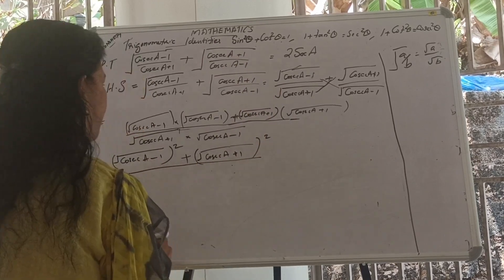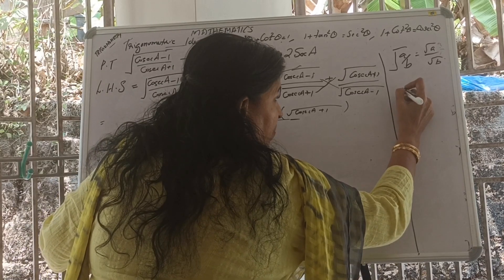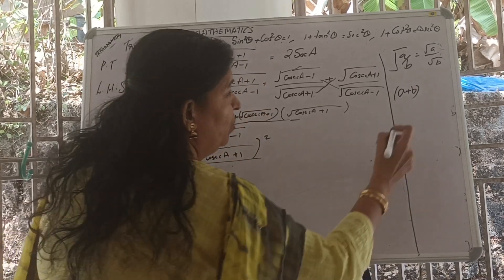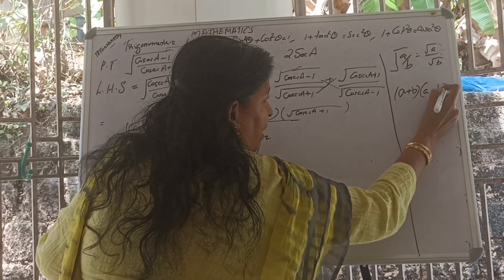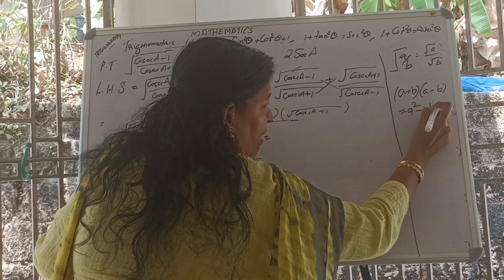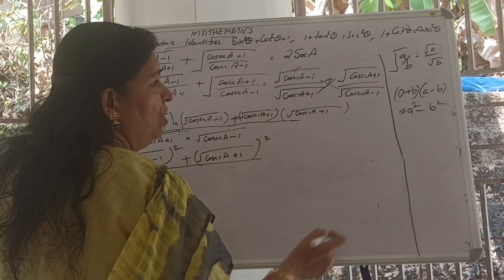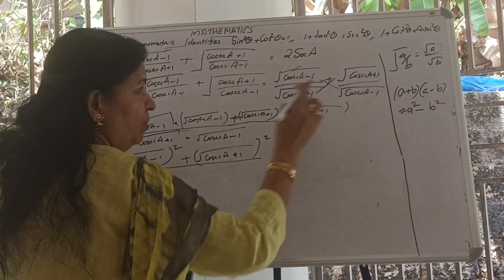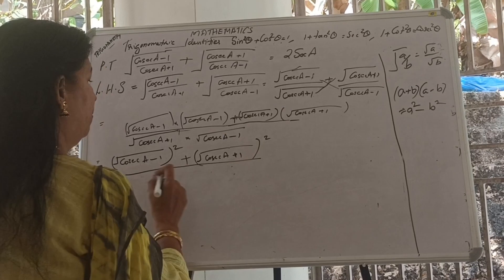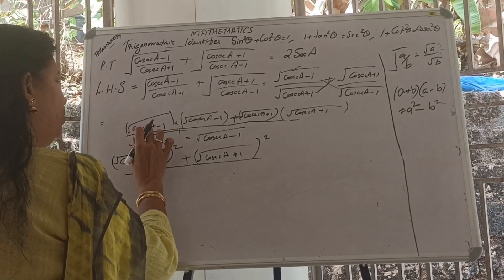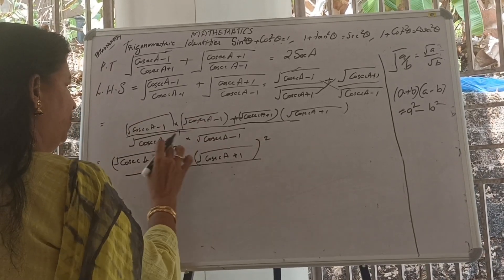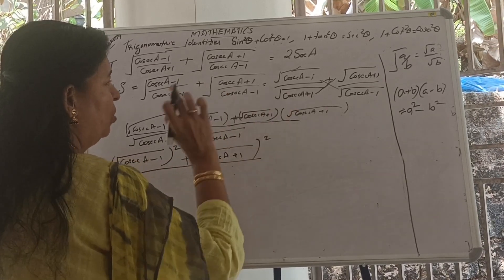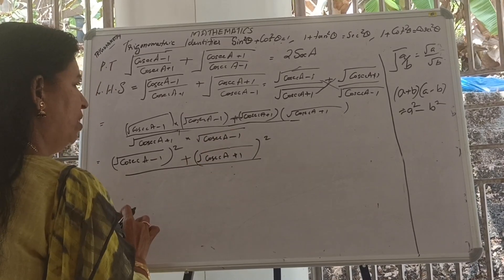We apply the algebraic identity: root of (A squared) equals A. So root of (cosec A minus 1) squared equals (cosec A minus 1), and root of (cosec A plus 1) squared equals (cosec A plus 1). The numerator becomes (cosec A minus 1) plus (cosec A plus 1).